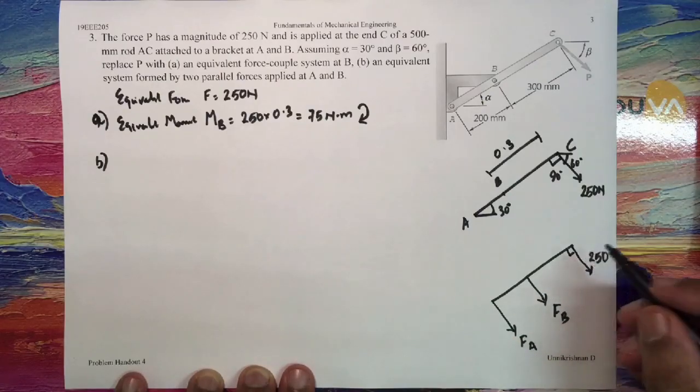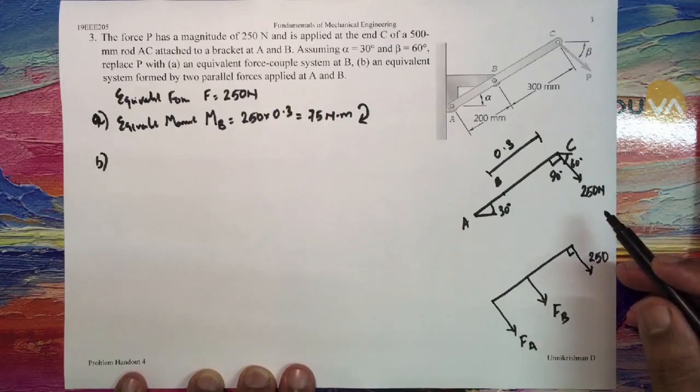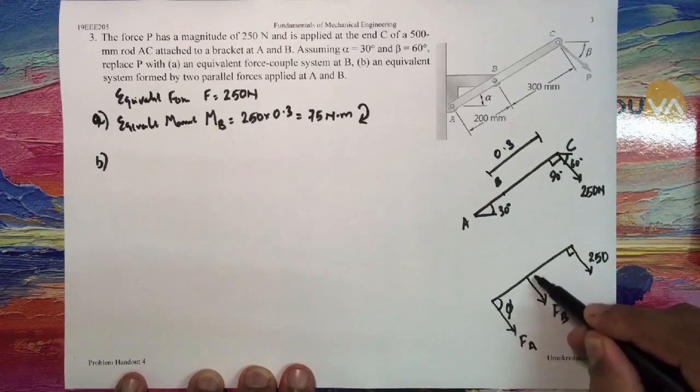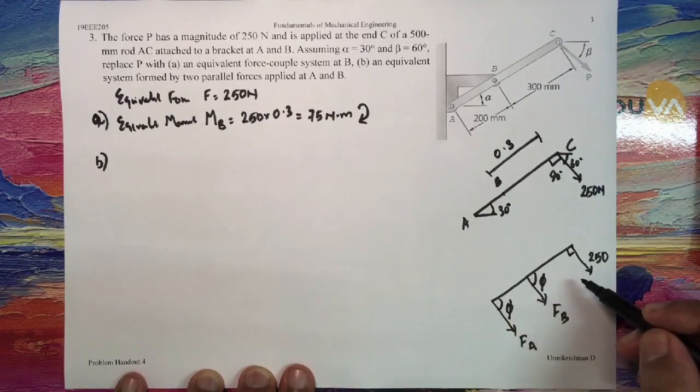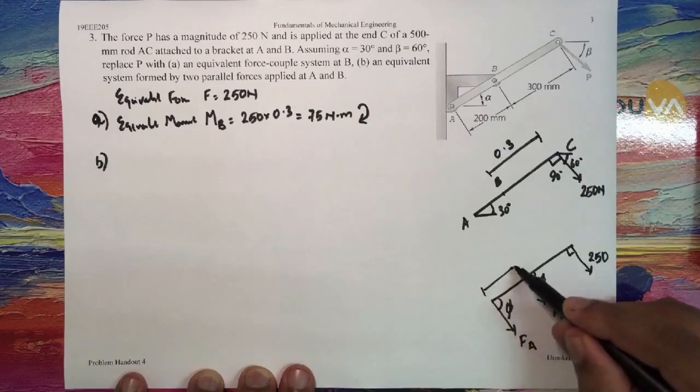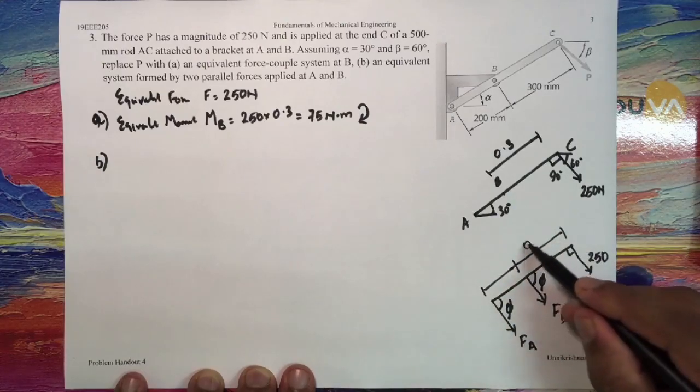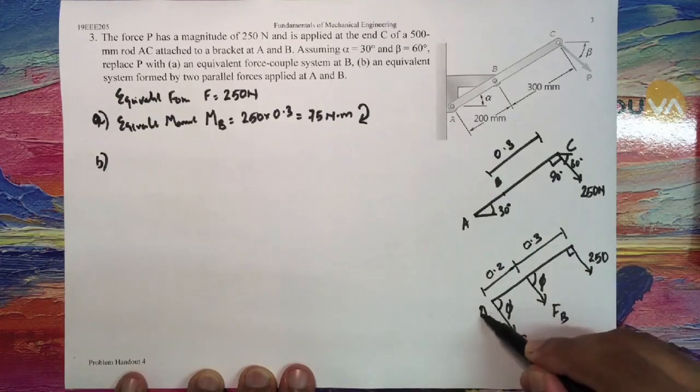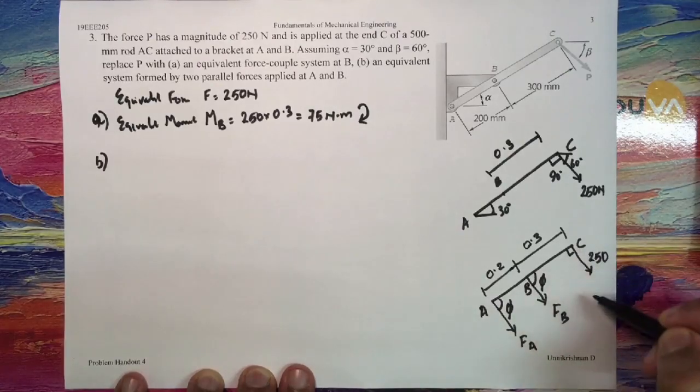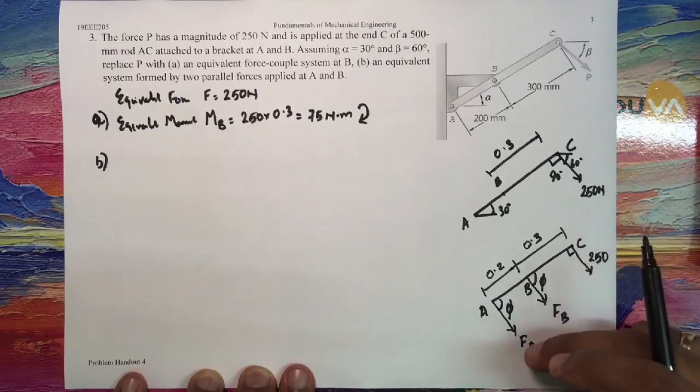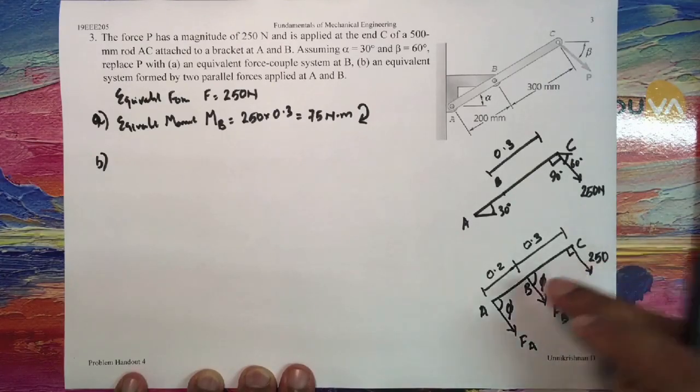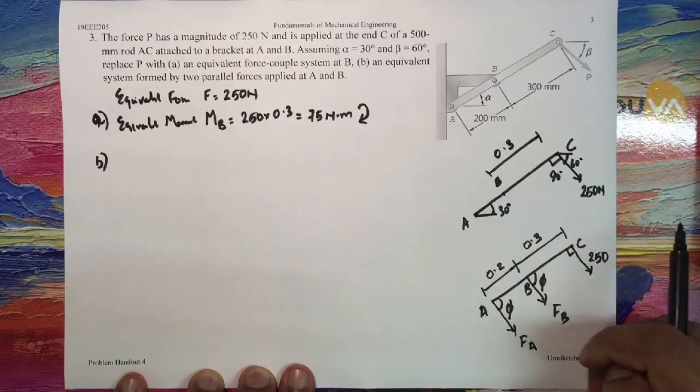At point B there will be a force FB, and at point A also there is a force FA. Now if you consider these forces an equivalent system, so that means the effect of FA and FB which is acting at some angle phi, we do not know right now. Let us assume that to be an angle of phi, and these distances are fixed: 0.3 and 0.2. This point being A, B, and C.